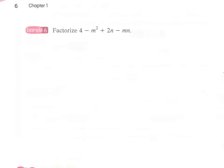Finally we come to the final example of this section. Factorize 4 minus m squared plus 2n minus mn. We have a total of four terms and we cannot find any common factor across all four terms. Remember we now have three different factorization methods: taking out common factor, grouping like terms, and difference of two squares. The order of applying these methods depends on the question.